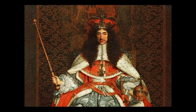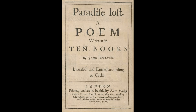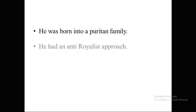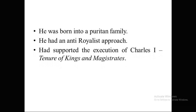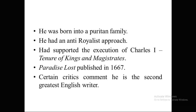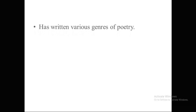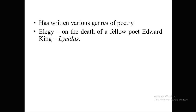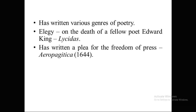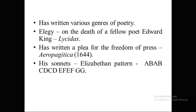During this Puritan age, all the theaters were shut down, there was no entertainment, and people started believing in moral philosophy rather than secular philosophy. God was considered to be the prime subject of various literatures that emerged during the Puritan age. Milton was born into a Puritan family and had an anti-royalist approach throughout his life. He supported the execution of Charles I in his work titled The Tenure of Kings and Magistrates, and he published his major work Paradise Lost in 1667.